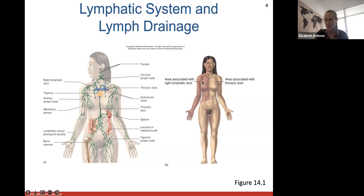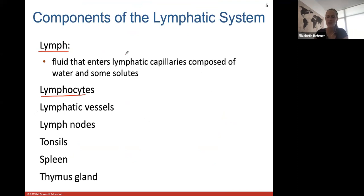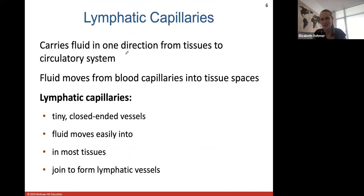The lymphatic drainage system travels throughout the body — through the mammary plexus, down through the abdominal cavity, and into the legs. Eventually the lymphatic system drains all this excess fluid back into the circulatory system. Once cleaned out, it enters back into your subclavian veins, which return it to your heart. Components of the lymphatic system include lymph, lymphocytes, lymphatic vessels, lymph nodes, tonsils, the spleen, and the thymus gland.